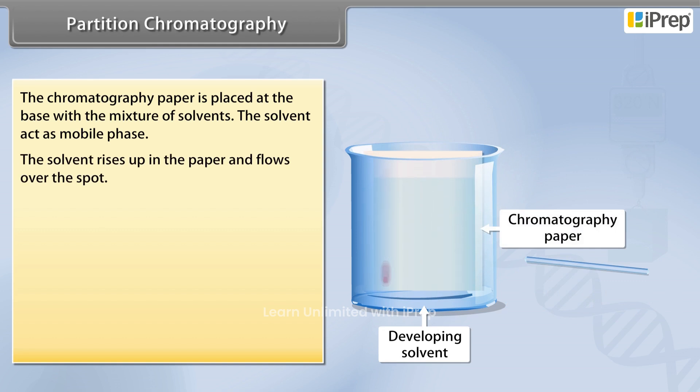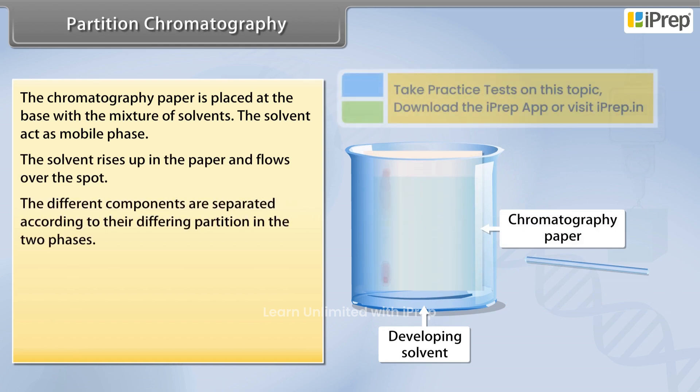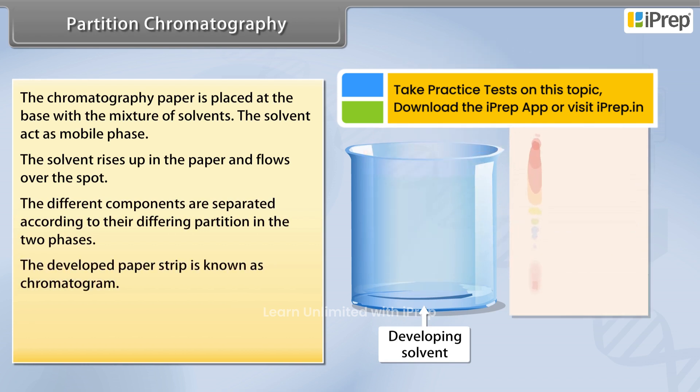The solvent flows over the spot. The different components are separated according to their differing partition in the two phases. The developed paper strip is known as a chromatogram.